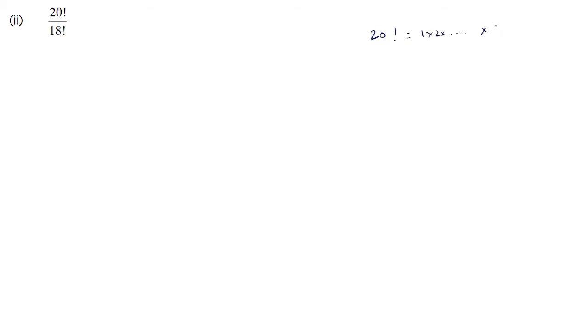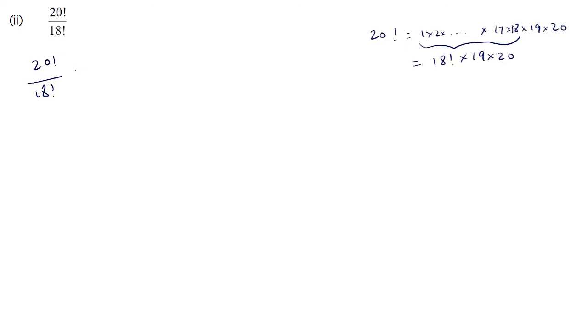Next question: 20 factorial upon 18 factorial. Now 20 factorial is 1 × 2 × ... × 18 × 19 × 20. The product 1 × 2 × ... × 18 can be written as 18 factorial, so 20 factorial equals 18 factorial × 19 × 20. Therefore 20!/18! = (18! × 19 × 20) / 18!, and the 18 factorials cancel, giving 19 × 20 = 380.